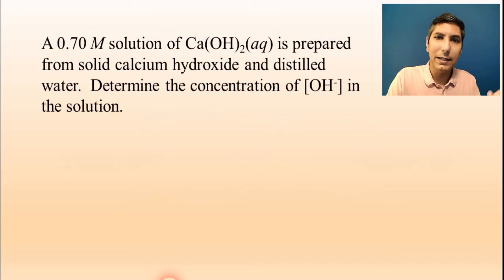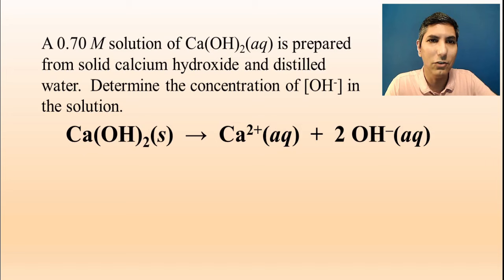Let's take a look at an example problem with Arrhenius bases. Let's imagine that we have a 0.70 molar solution of calcium hydroxide that is prepared from solid calcium hydroxide and distilled water. Determine the concentration of hydroxide ions in the solution. Well, it might be useful to have the actual equation here, so we can look at that.